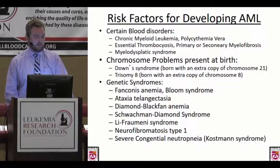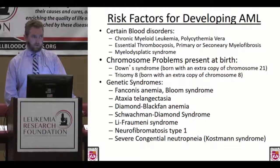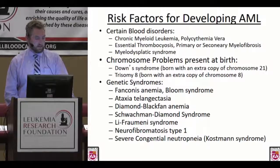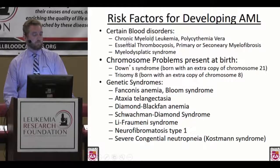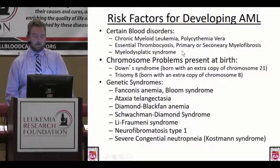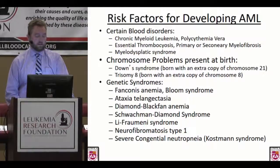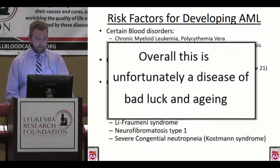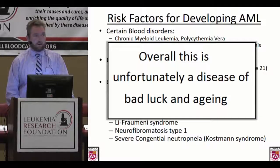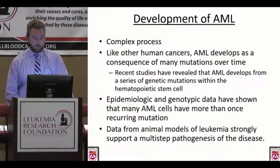There are some rare genetic syndromes that can increase risk, as well as chromosomal problems present at birth like Down syndrome, Edwards syndrome, or Trisomy 8. We also see in our clinics that certain blood disorders like chronic myeloid leukemia and myeloproliferative neoplasms like polycythemia and essential thrombocytosis can increase the risk of developing AML. But at the end of the day, this really is just a disease of bad luck and age — there's not a lot we can modify to reduce the risk.